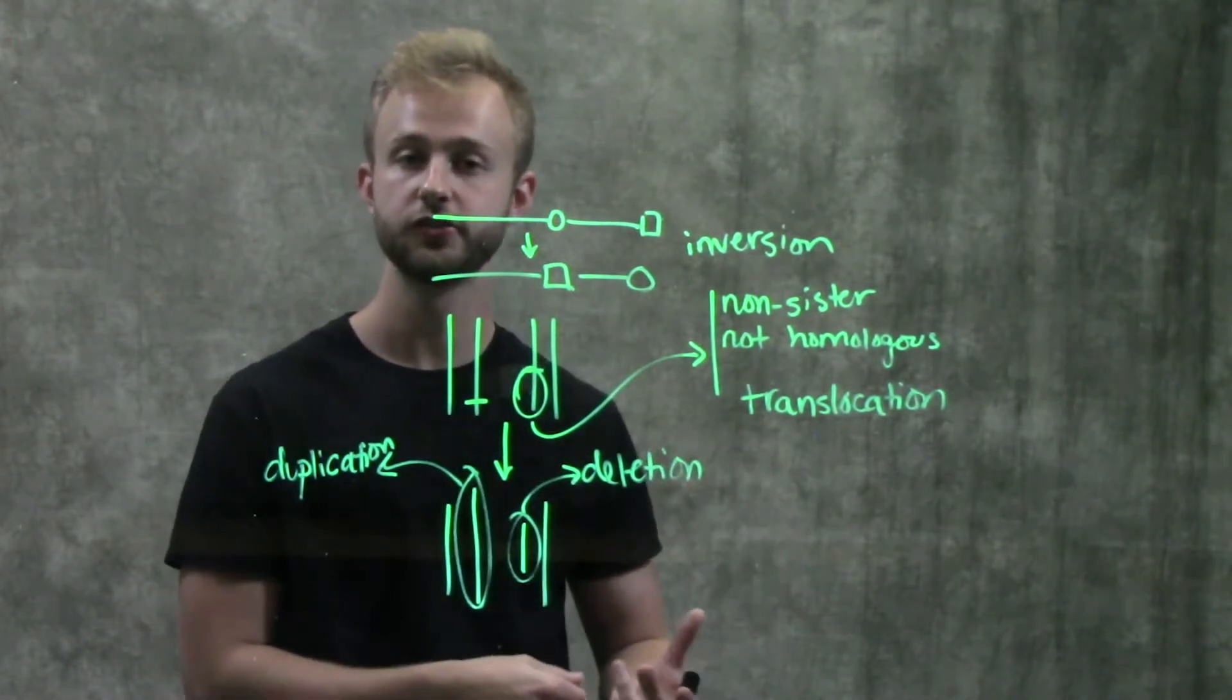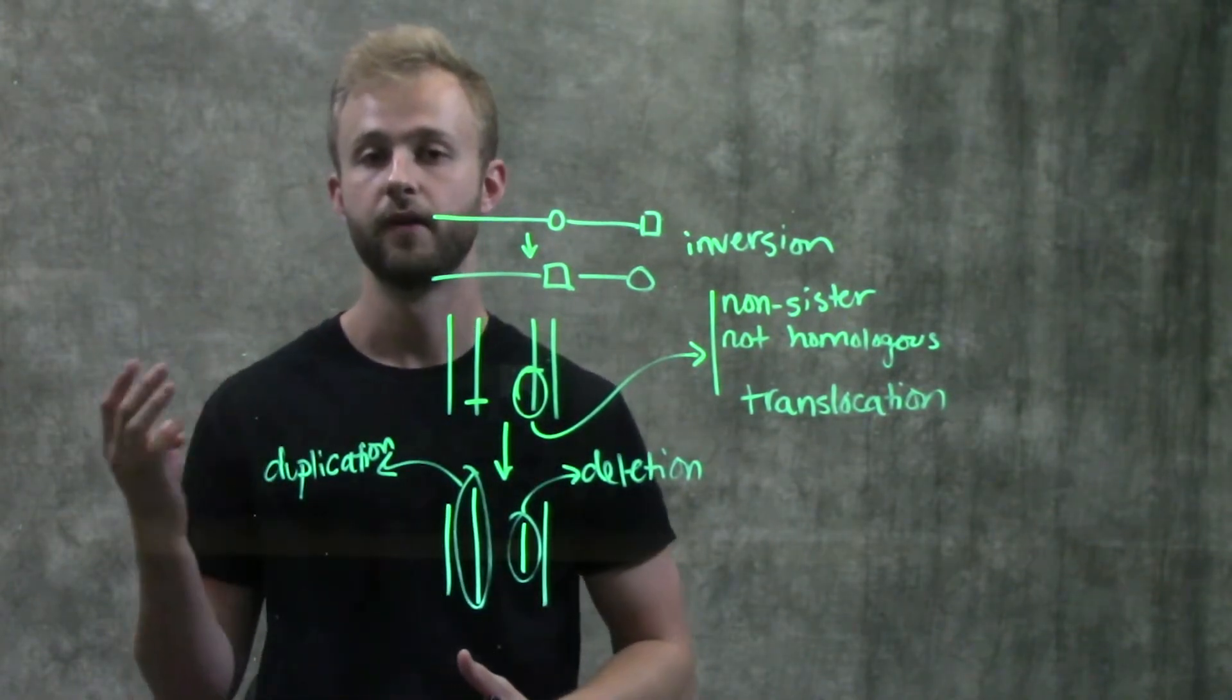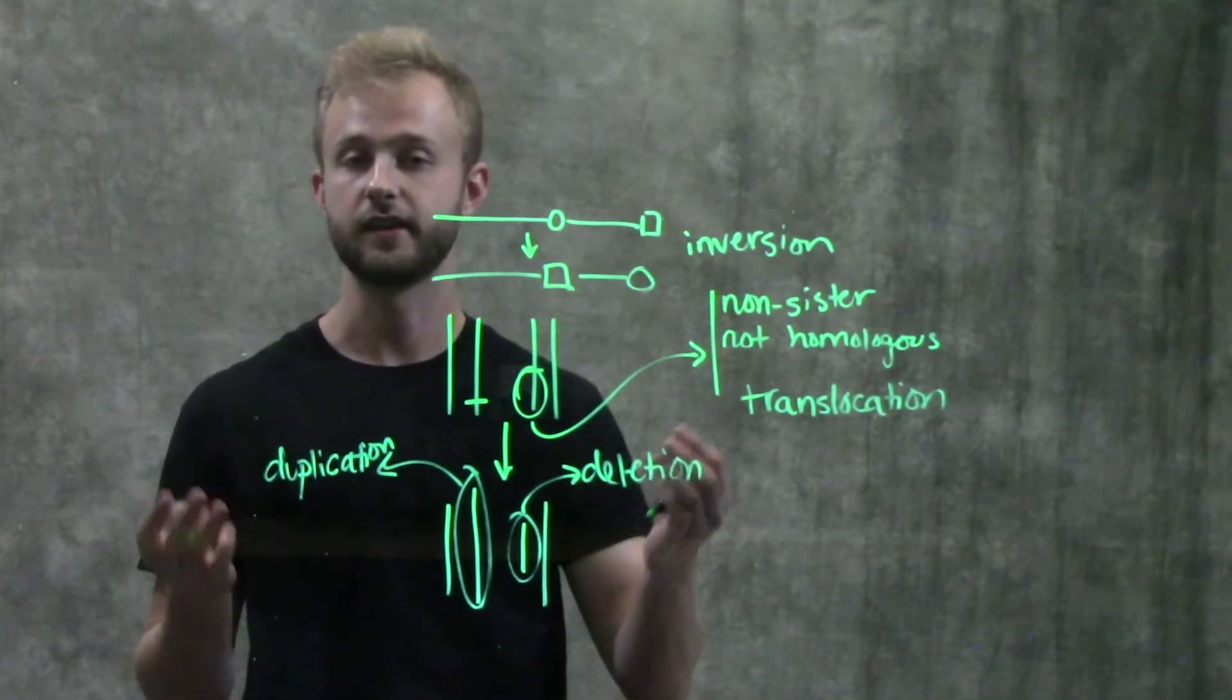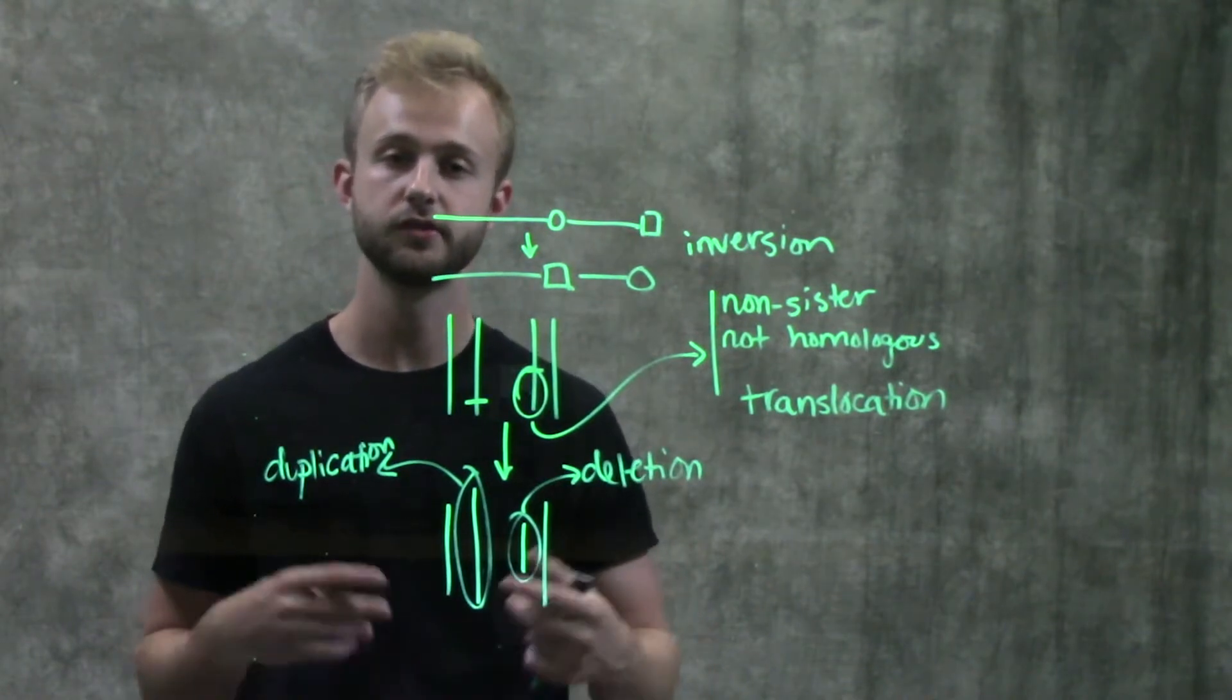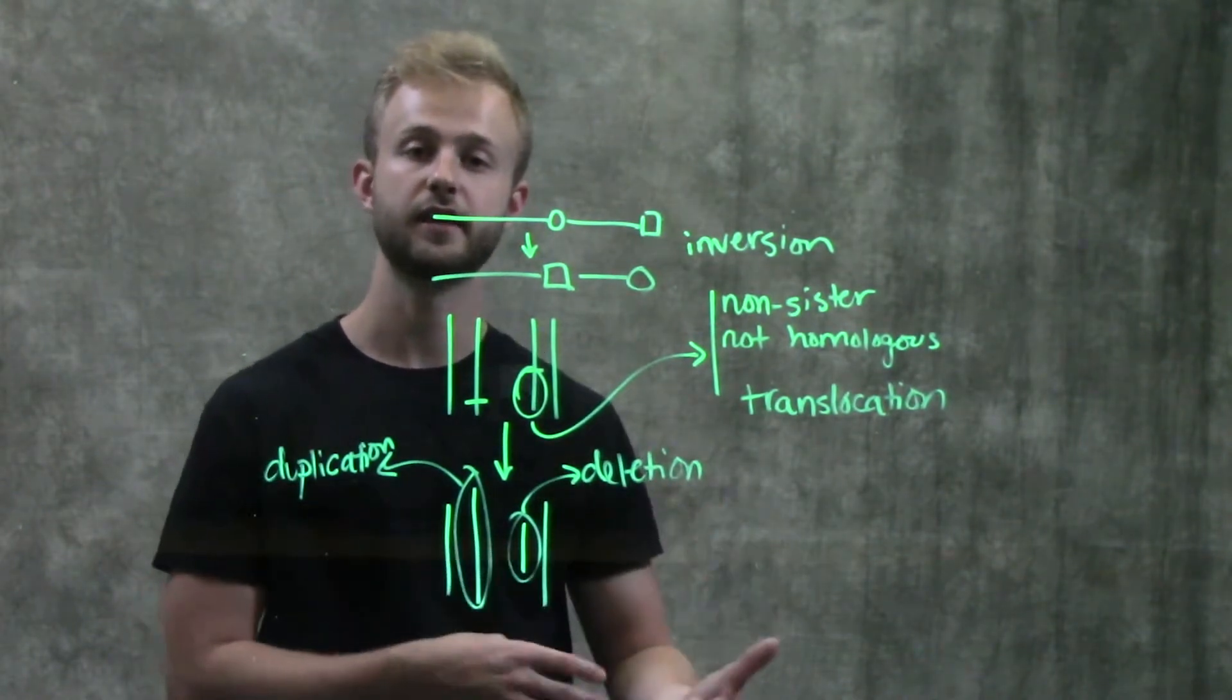Just like we don't want tumor suppressor genes to be translocated to be by a promoter that doesn't have very high levels of transcription. Those genes wouldn't get expressed very often and those could lead to cancer.